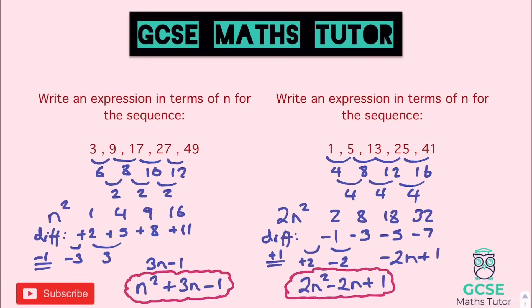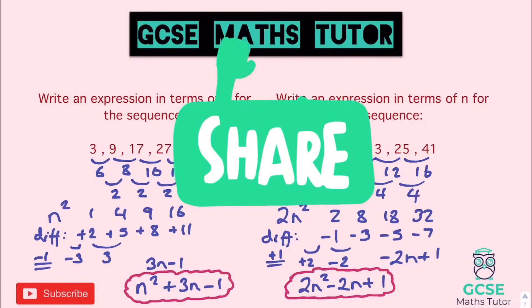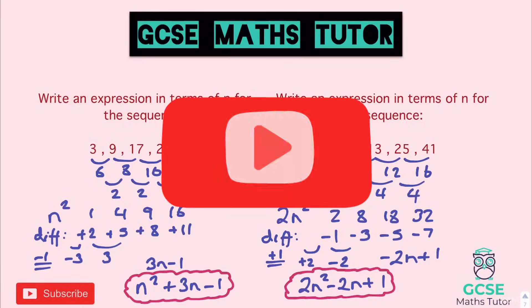And that is how you find the nth term of a quadratic sequence. Now there are other ways of doing this — there is a formula approach that you can use. I personally don't really like the formula, because I don't think it builds the understanding behind this topic and why you get the nth terms that we do, and how they relate to the square numbers. But that is quadratic sequences — some harder ones and some easier ones. If you found that useful, please like, comment, subscribe, and I'll see you for the next video.